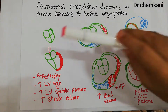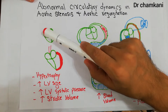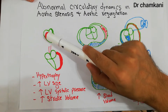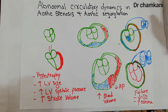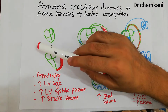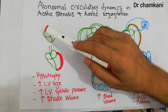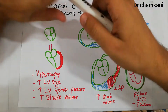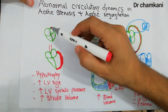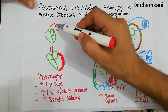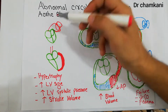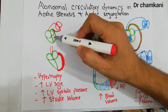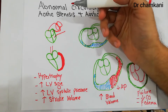First, consider a normal heart with absolutely normal dynamics. The blood comes normally into the right atrium, then goes into the right ventricle, from where it goes into the lungs. In the lungs the blood is oxygenated, then it comes back into the left atrium, from the left atrium into the left ventricle, and from the left ventricle it goes into the body.